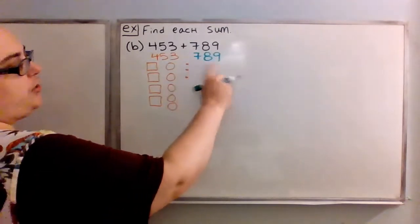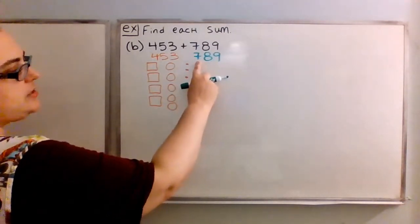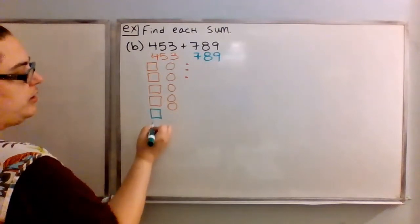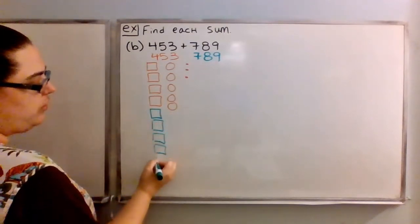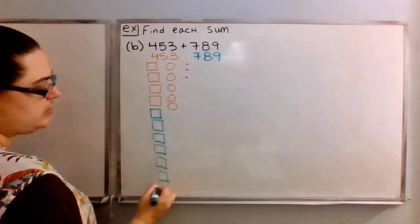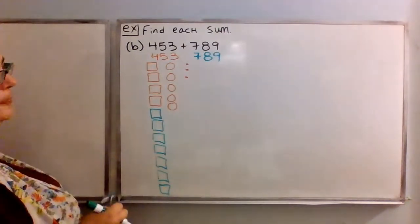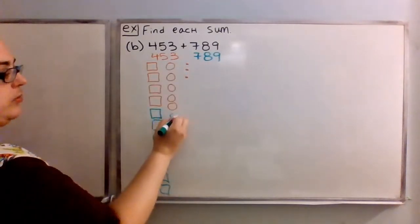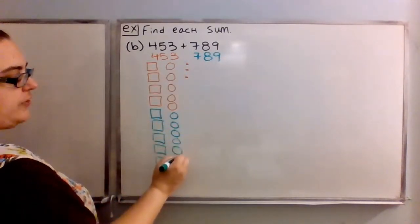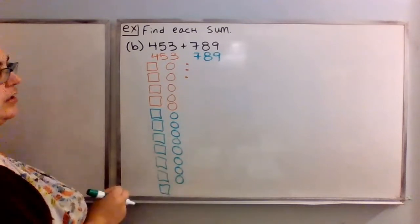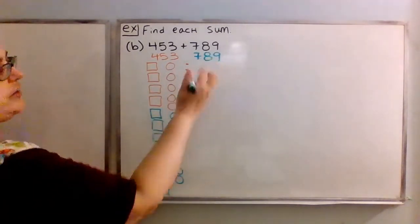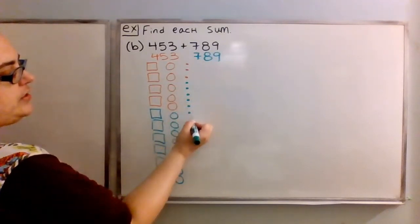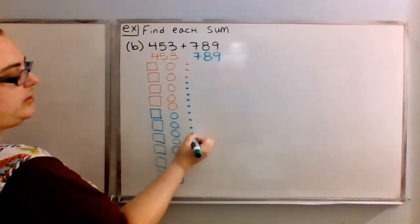Instead of writing them side by side, since I know that sometimes I might want to group things together, I'm going to use another color — green — to represent 789, and basically line up the shapes in the same places. For 789, I need seven boxes, so I'm going to add those seven boxes. Then I need eight circles in the circle column, and then nine dots.